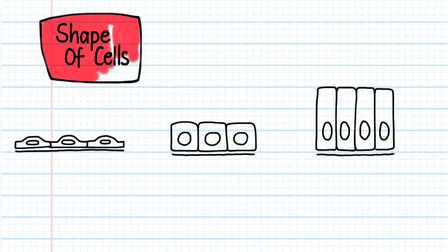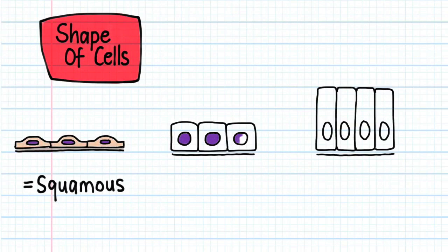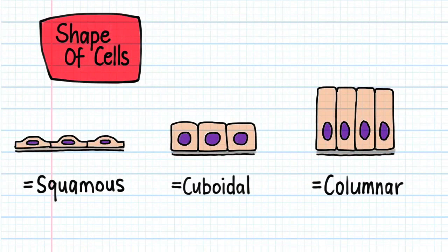Next, let's look at the shape of epithelial cells. If the cells are flat, we call the epithelium squamous. If the cells are cube-like, the epithelium is cuboidal. And if the cells are column-shaped, the epithelium is columnar.